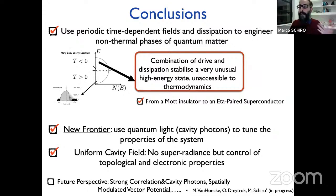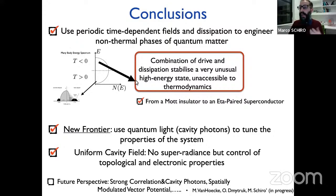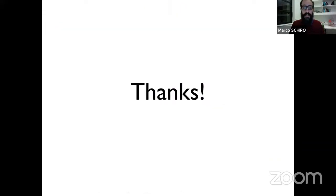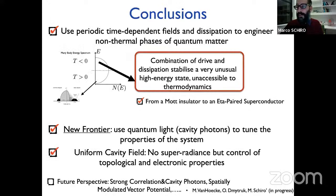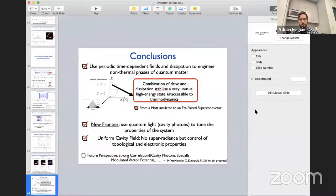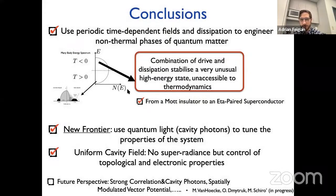In conclusion: using periodic drives you can generate new phases of quantum matter. The take-home message is that the phase diagram of many-body quantum systems has very unusual states in the high-energy sector — not appearing in thermodynamics — that can be dynamically populated. An example is the transition from a Mott insulator to an eta-pairing superconductor. The second part concerned using quantum light and cavity methods for Floquet engineering to control topological phases. Thank you all for your attention; I am happy to answer questions.